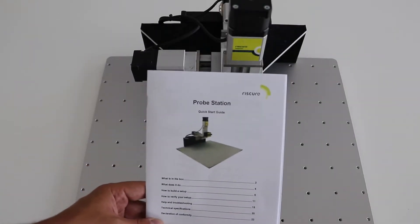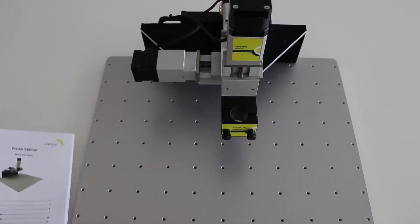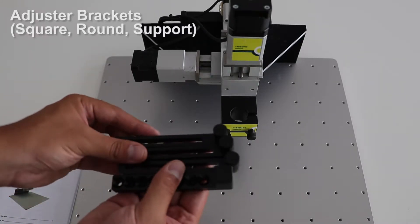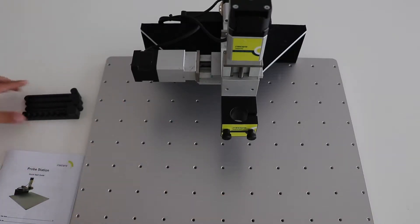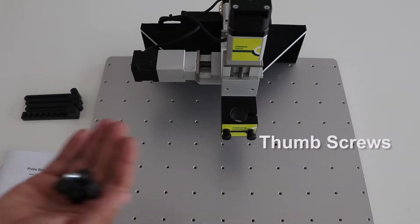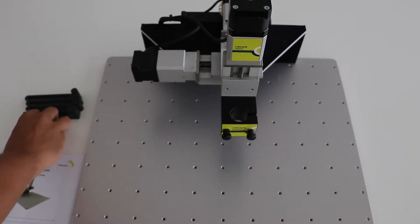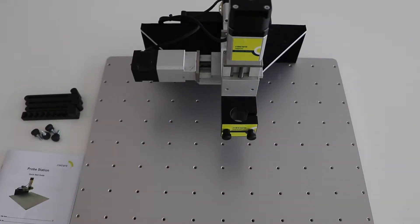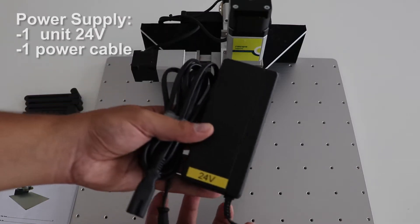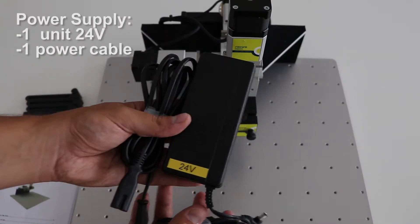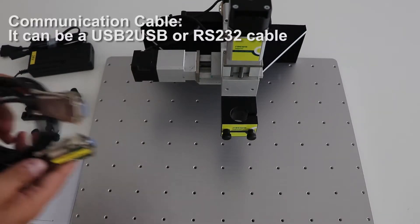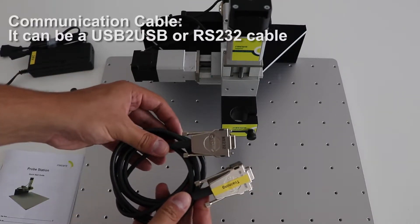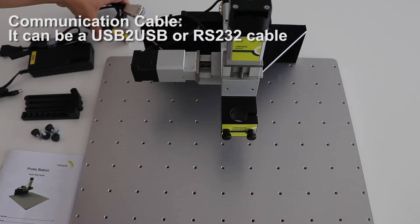Along with the station, you will get a quick start guide, a set of adjuster brackets to keep your target steady, thumb screws for the brackets, a power unit of 24 volts, and a communication cable which can be a USB or an RS232, depending on the version of the station.